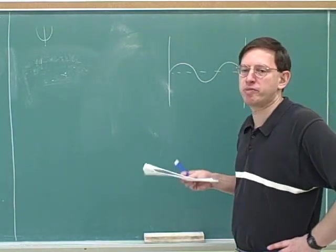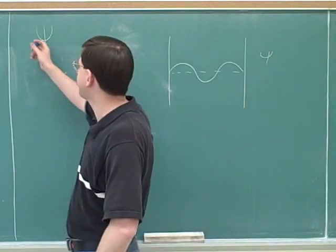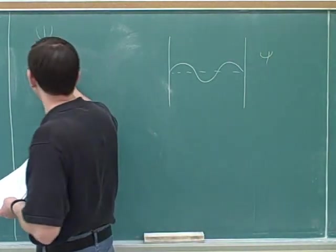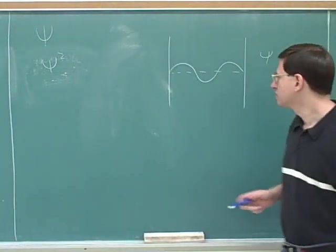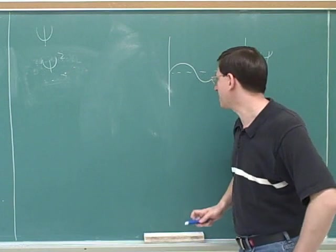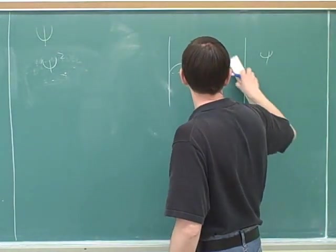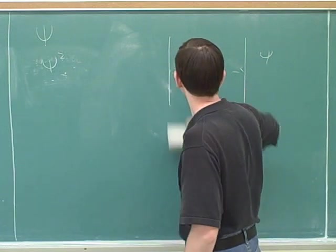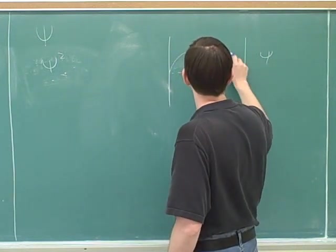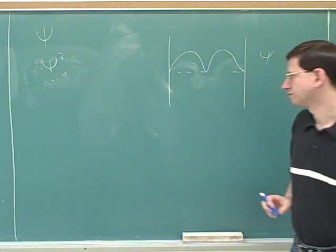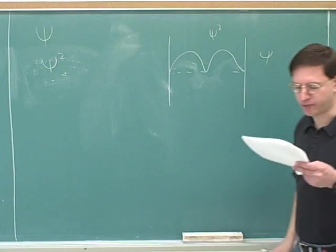I said that psi represents the probabilities — that was only roughly speaking. To be more accurate, it's the wave function squared that gives the probabilities. The square of the wave function is the probabilities. So I could take this function here and square it, and then all the displacements would be positive. So this might be what psi squared looks like, approximately speaking.